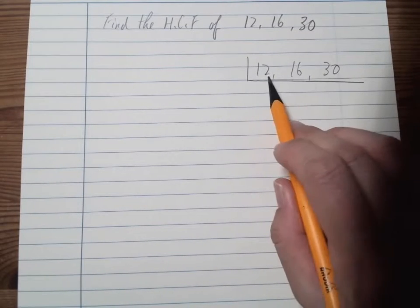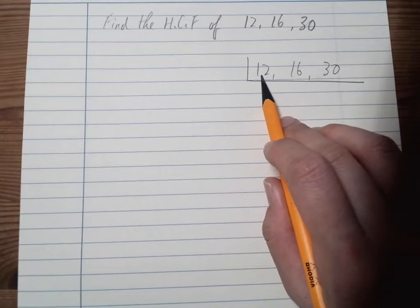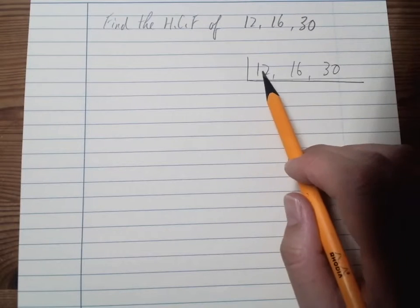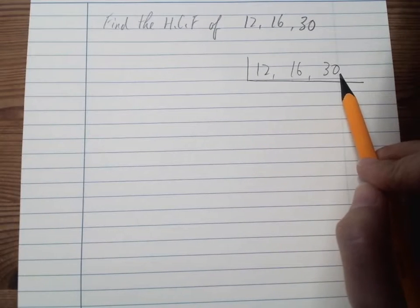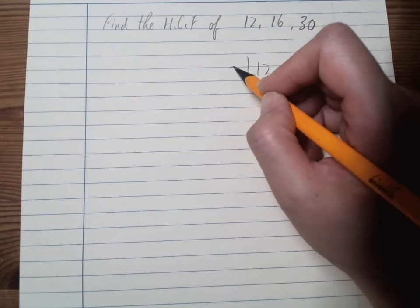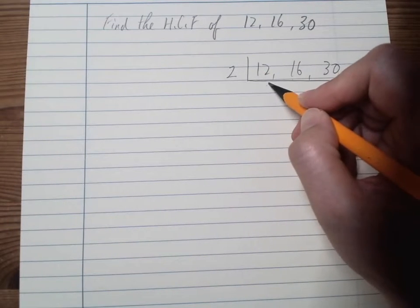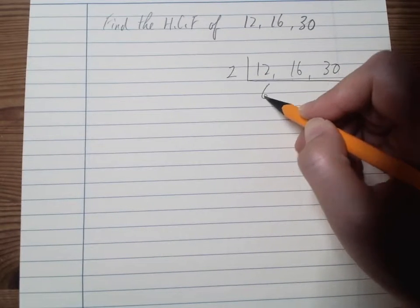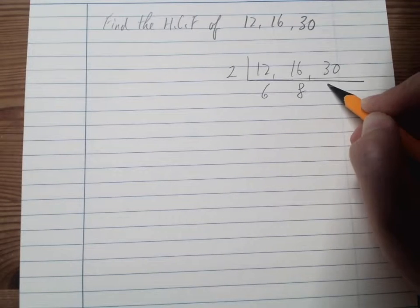I need to find some numbers which are able to divide it by, actually which could divide 12, 16, and 30 fully. Start with all even numbers, so let me try that. So 2 will be 6, 8, and 15.